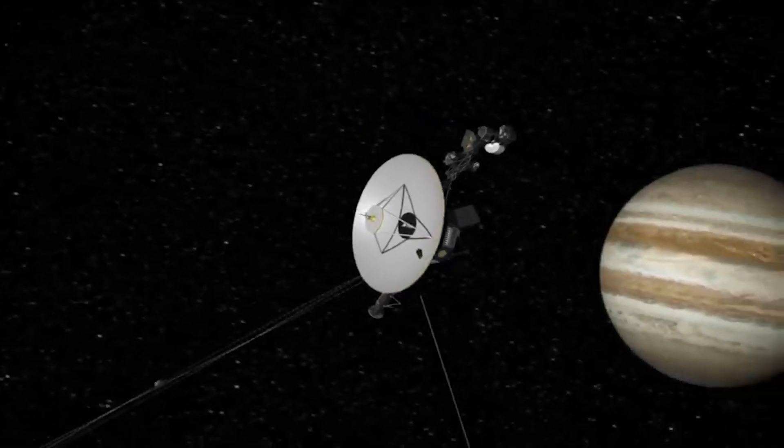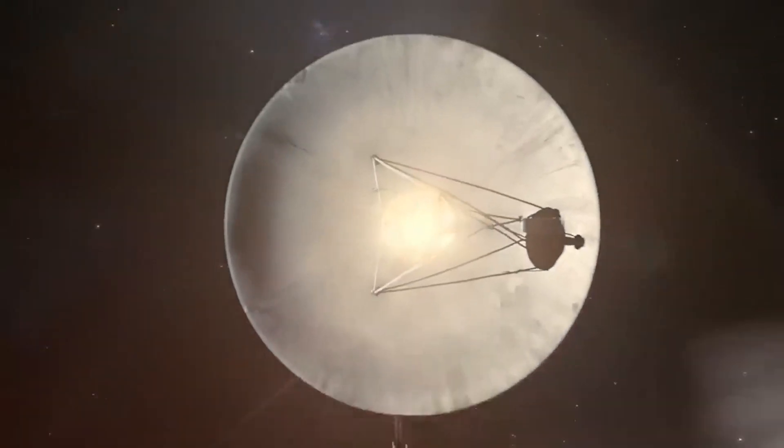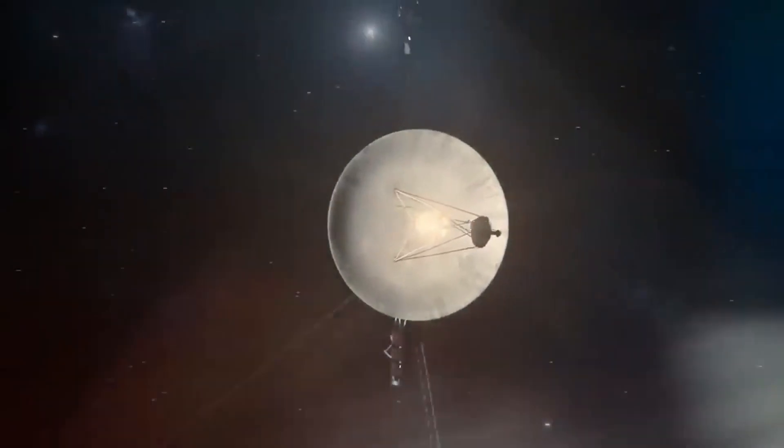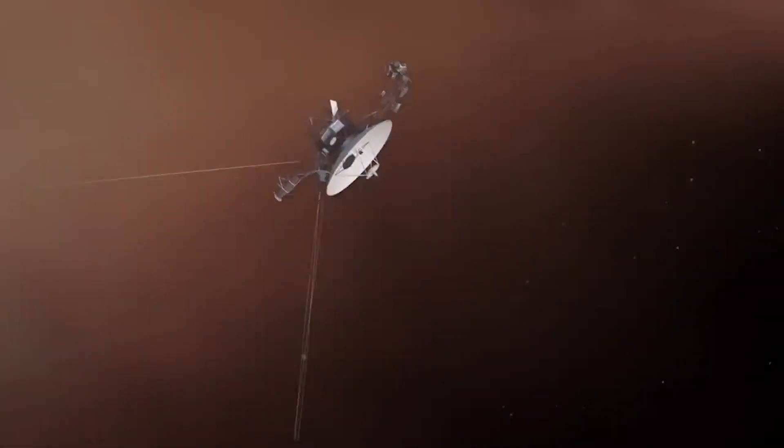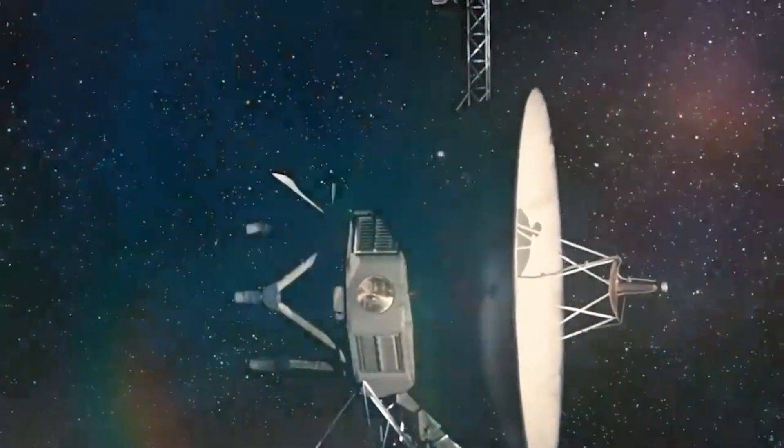It went through Jupiter and Saturn on its route to the outer boundary of the heliosphere. At the termination shock, which it crossed in 2004, the solar wind slows down and becomes turbulent due to its interaction with the interstellar medium.